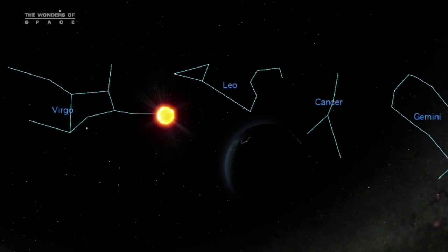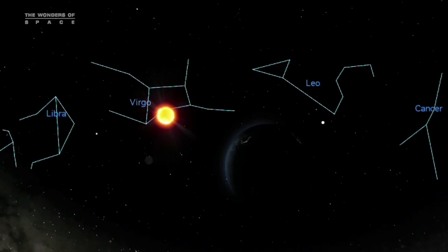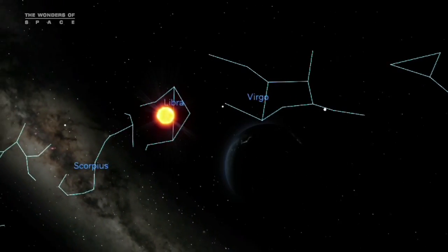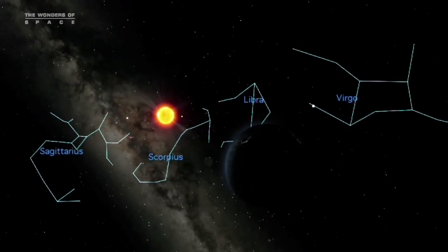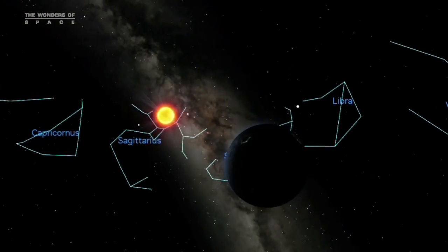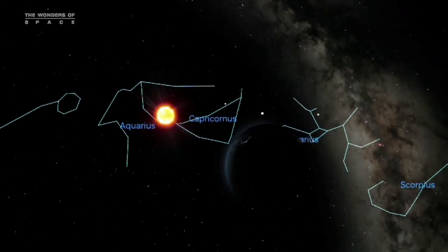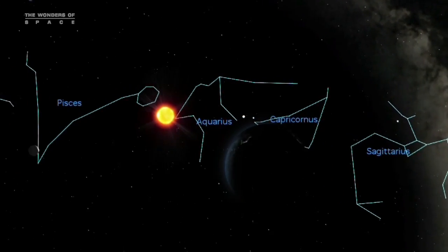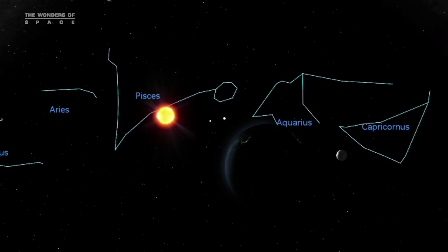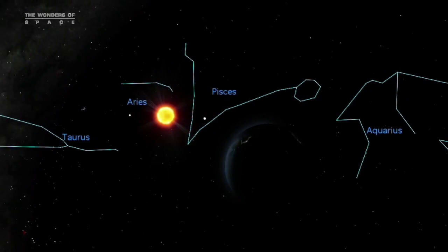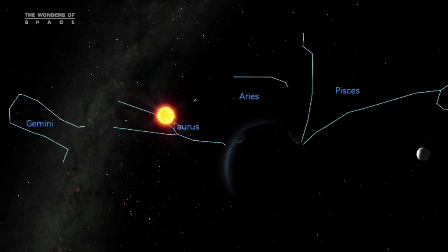Well, one way, called a sidereal year, measures our orbit against the distant stars. As viewed from the Earth, our orbit causes the Sun to appear to move through the constellations of the zodiac on a path called the ecliptic. And when the Sun returns to its starting point, a sidereal year has passed.